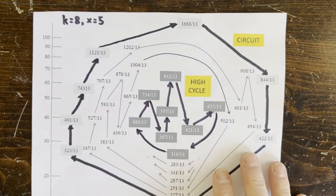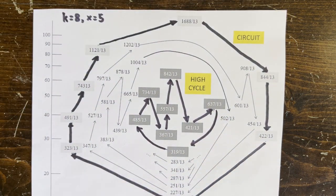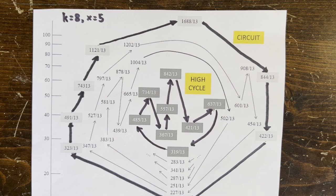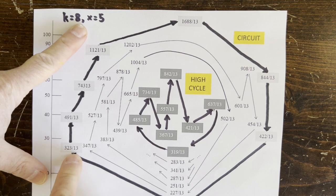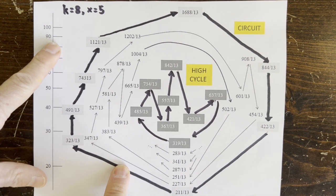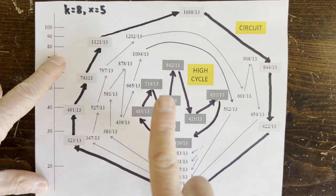And there are 7 loops of length k equals 8 with x equals 5 up moves. Every m has the form beta over 2 to the k minus 3 to the x. And here every m has this denominator 13. But none of the betas are multiples of 13, so there are no integer loops here.